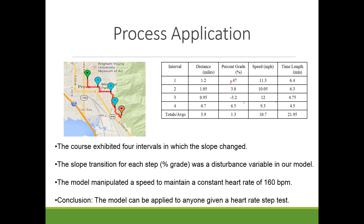The model manipulated speed while percent grade served as the disturbance variable. In conclusion, this model can be applied to anybody given a heart rate step test. For example, we would need to do a heart rate step test for a different individual, and they would have different speeds to maintain in order to keep their heart rate constant.